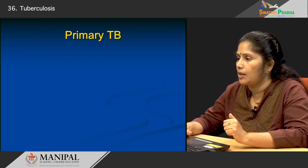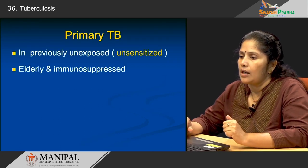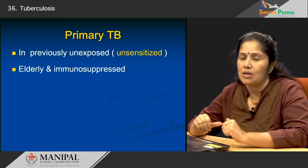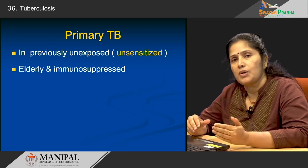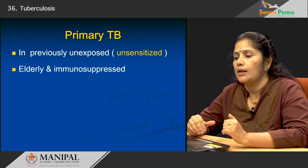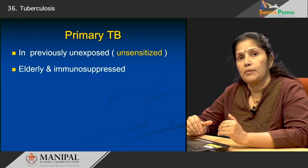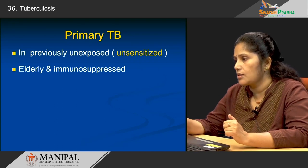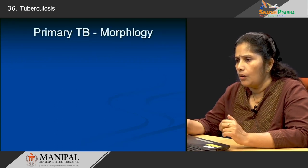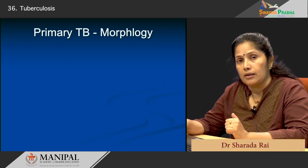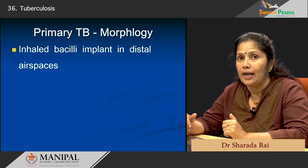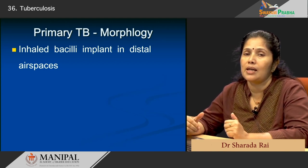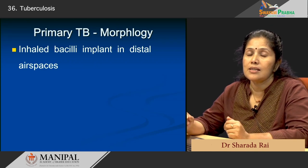Primary tuberculosis occurs in patients who have not been sensitized to this disease — previously unexposed patients. The elderly and immunocompromised patients are also prone to developing primary tuberculosis. The bacilli reach the lung mainly via droplet infection; they are inhaled and from there reach the distal airways.